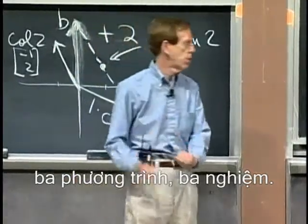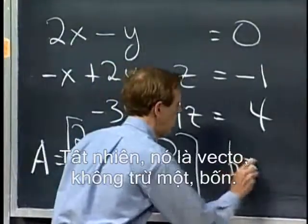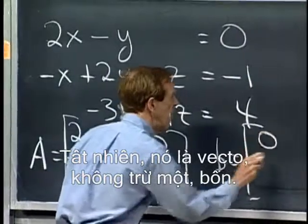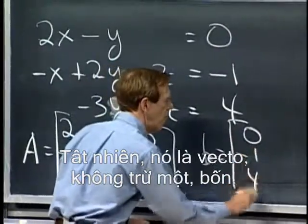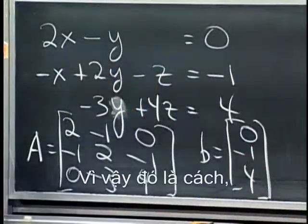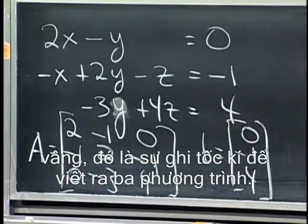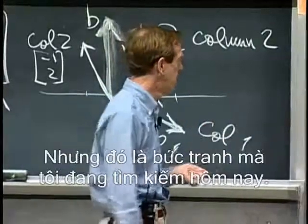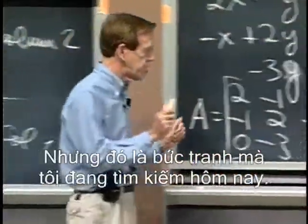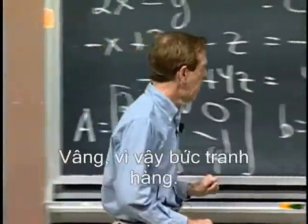Three equations, three unknowns. And what's our right-hand side? Of course, it's the vector: 0, -1, 4. That's the shorthand to write out the three equations. But it's the picture that I'm looking for today.